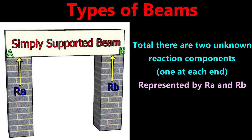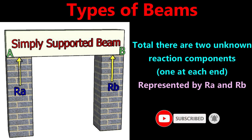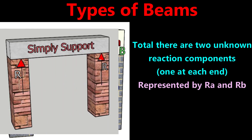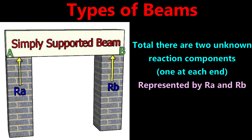In a simply supported beam, both ends rest freely on supporting columns or walls, so there is only one reaction component at each end, acting at right angles to the support. These reactions are represented as RA at point A and RB at point B. Since the reaction components act normal to the beam axis, the beam can resist only vertical forces. It cannot resist horizontal force or rotation — it is free to rotate.